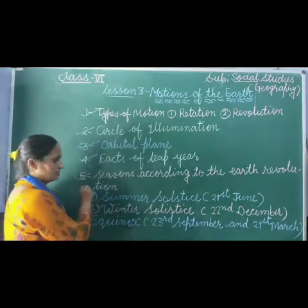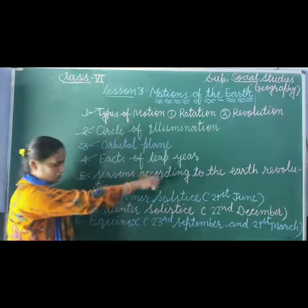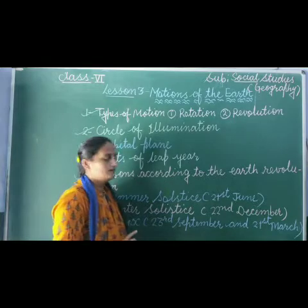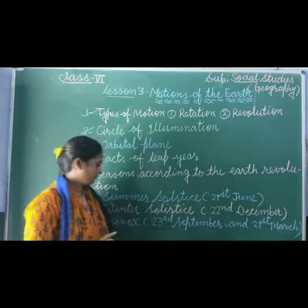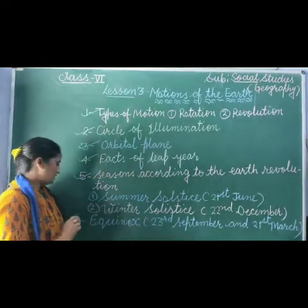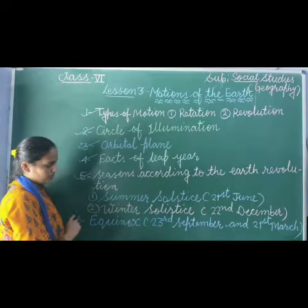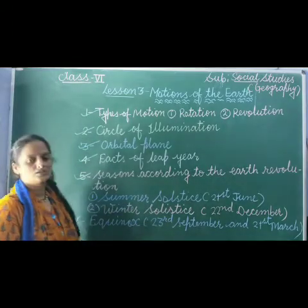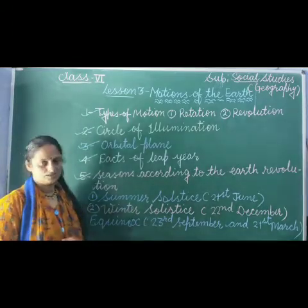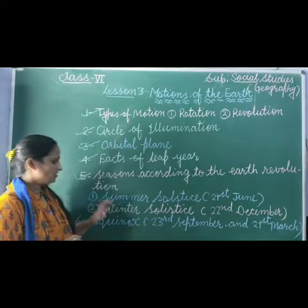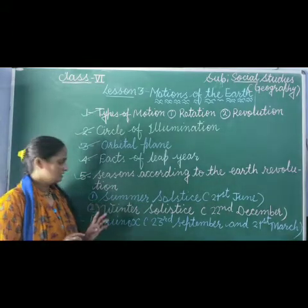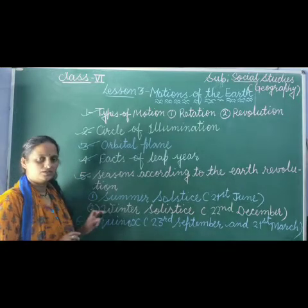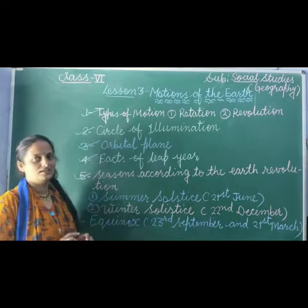Summer Solstice on 21st June, and Winter Solstice on 22nd December. Today's second topic is Equinox — 23rd September and 21st March. We will discuss and try to understand these two topics in this video. So let's start the lesson.